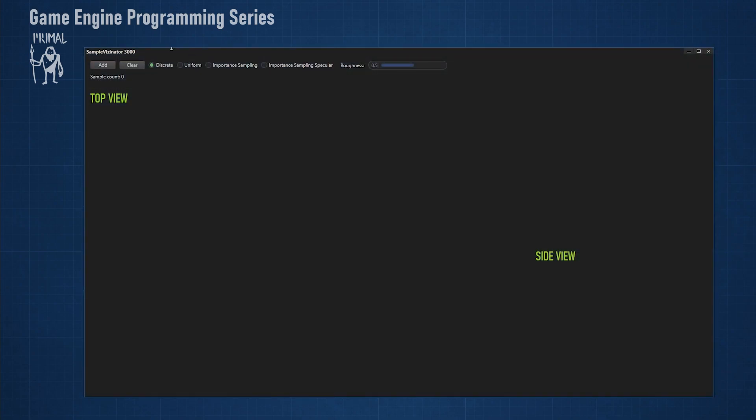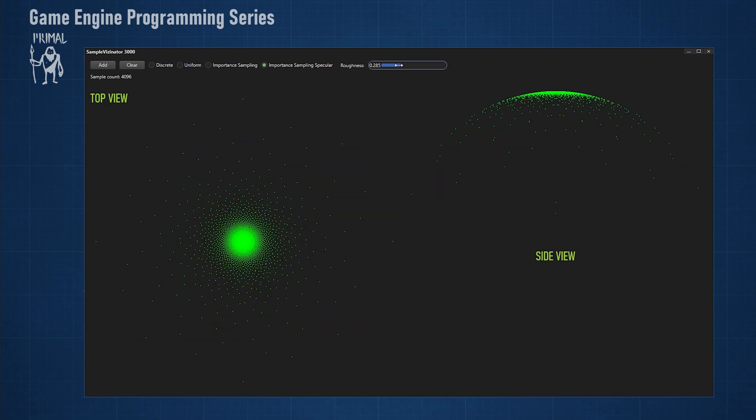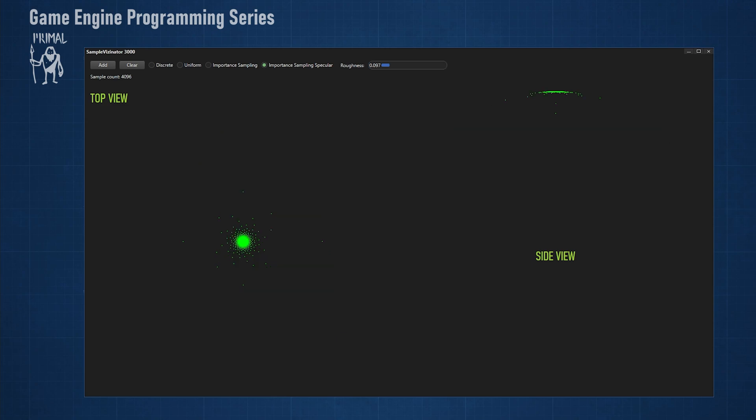I added this to the sample visualization program I made before. Here we see that the samples are more concentrated around the pole of the hemisphere for smoother surfaces. This makes sense since the distribution of light vectors converges to a smaller area for smooth surfaces. In fact, it will become a single point for a perfect mirror.